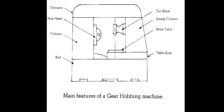Main features of a gear hobbing machine include: tail stock, steady rest, work table, bed, table slide, column, hob head, and arbor. The table slide moves to enable cutting.